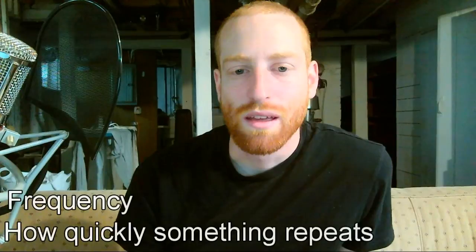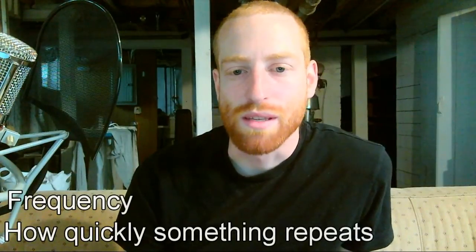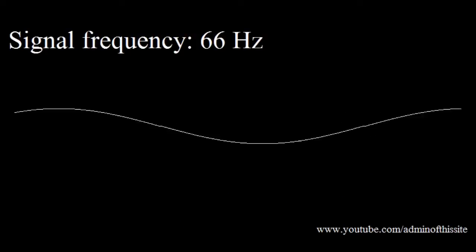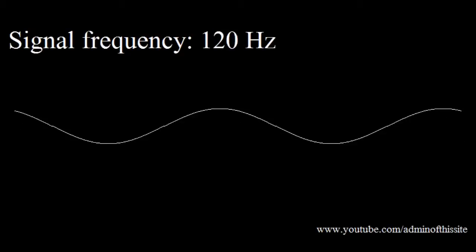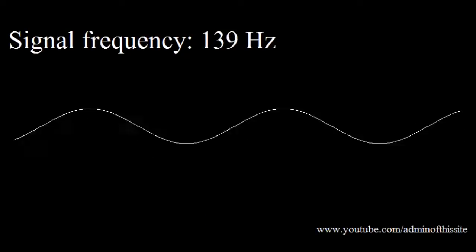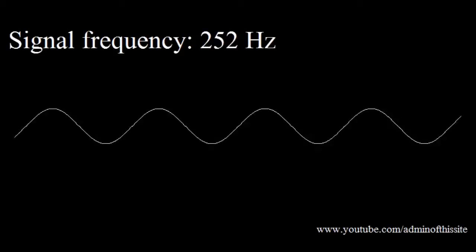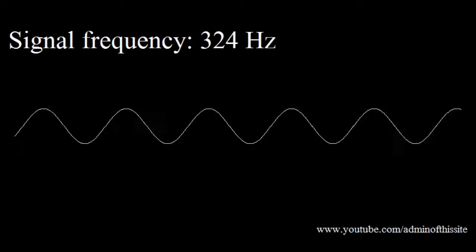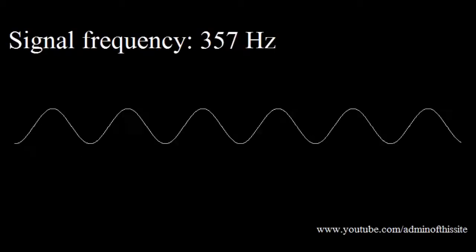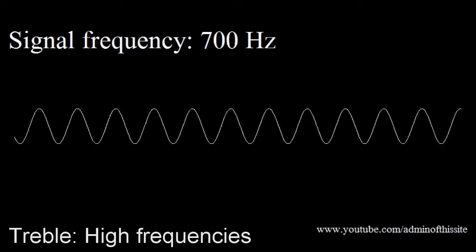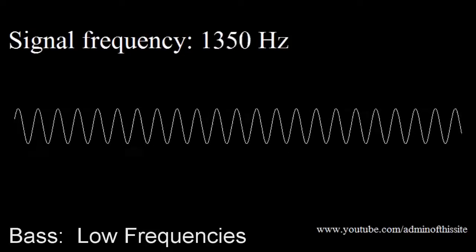Frequency. When you're talking about anything, frequency is how often something repeats. When you're talking about sound, it's how many times a sound wave repeats. It's measured in hertz, which is how many times something happens in one second. It determines pitch. So low frequencies sound low, and high frequencies sound high. Treble refers to high sounds, and bass refers to low sounds.